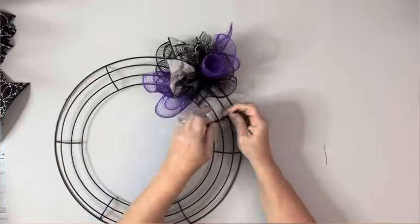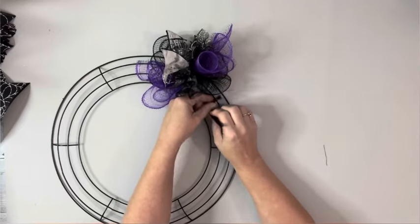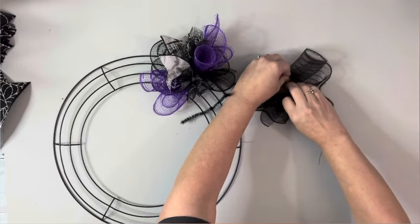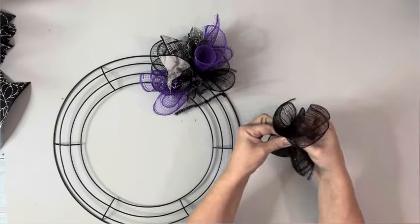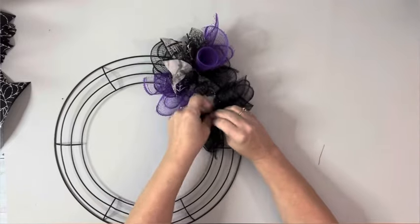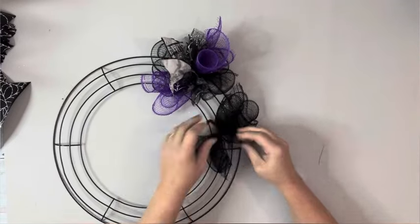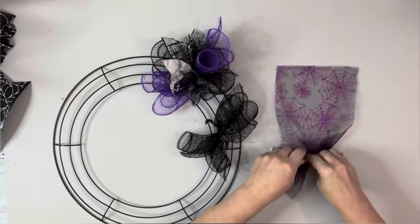And then I work on the second ring from the center. So I'm just going to alternate rings all the way around. Starting again with the black mesh, roll the ends, pinch in the center until it's completely together. Wrap it in that pipe cleaner.